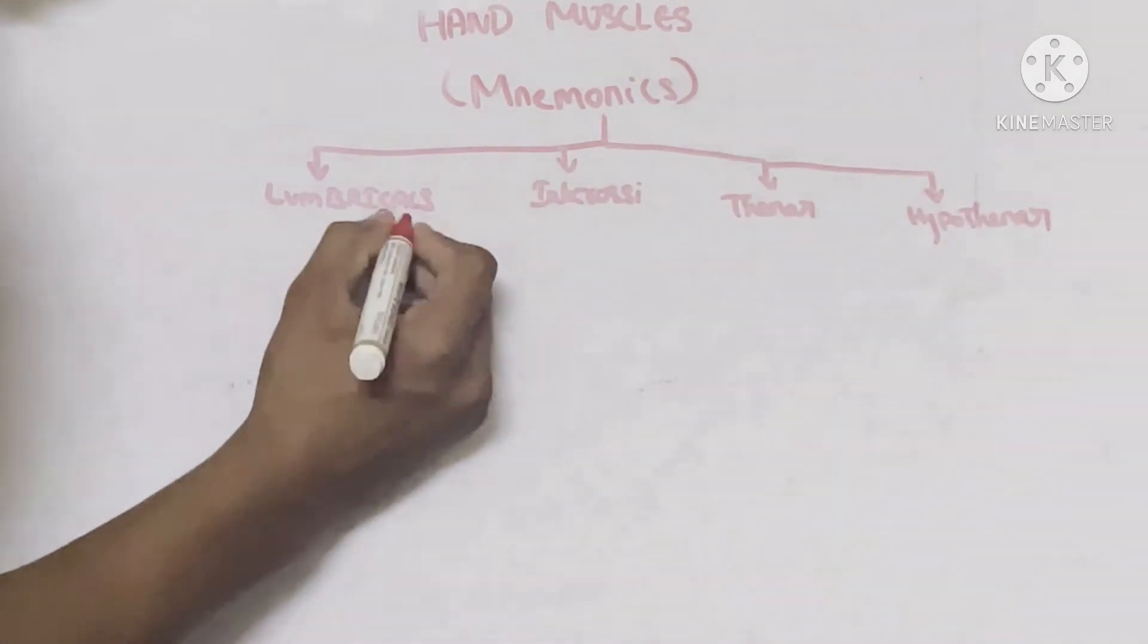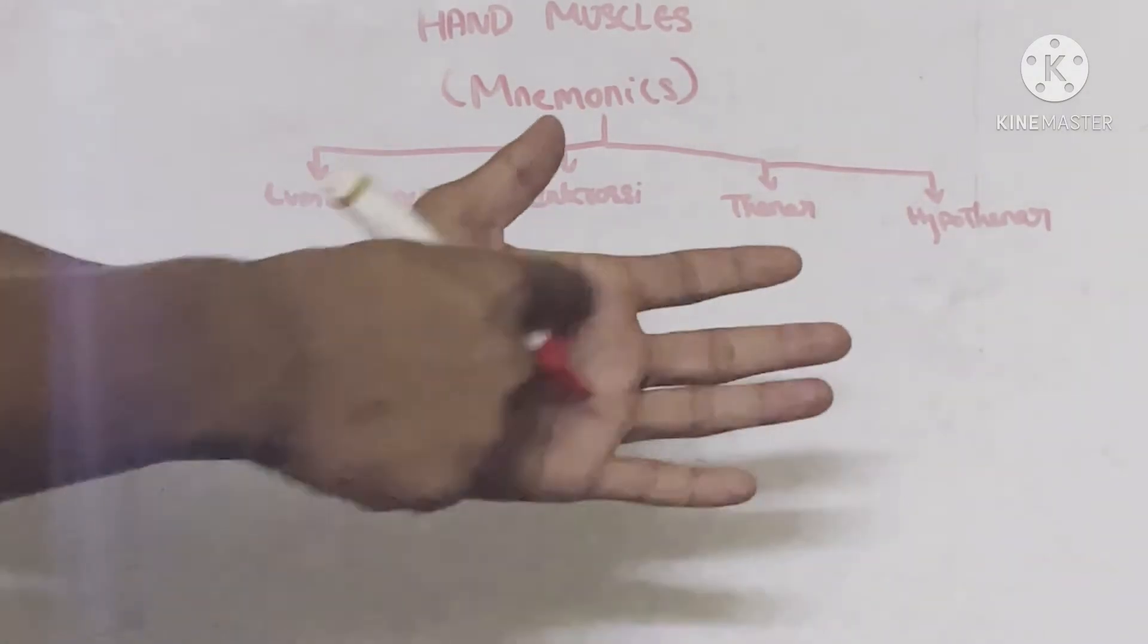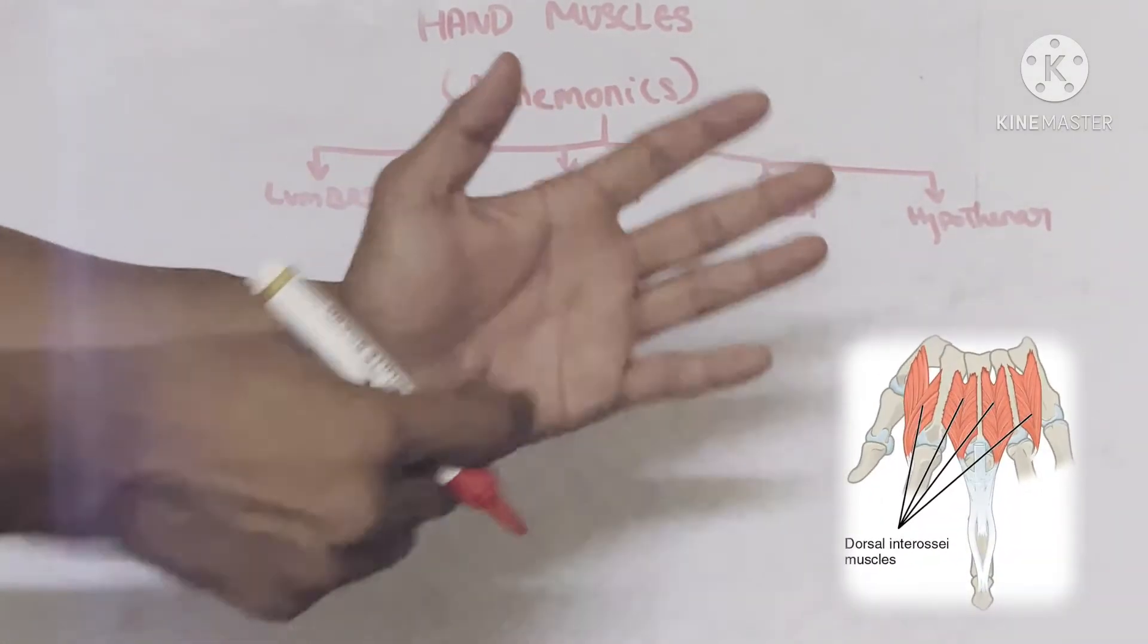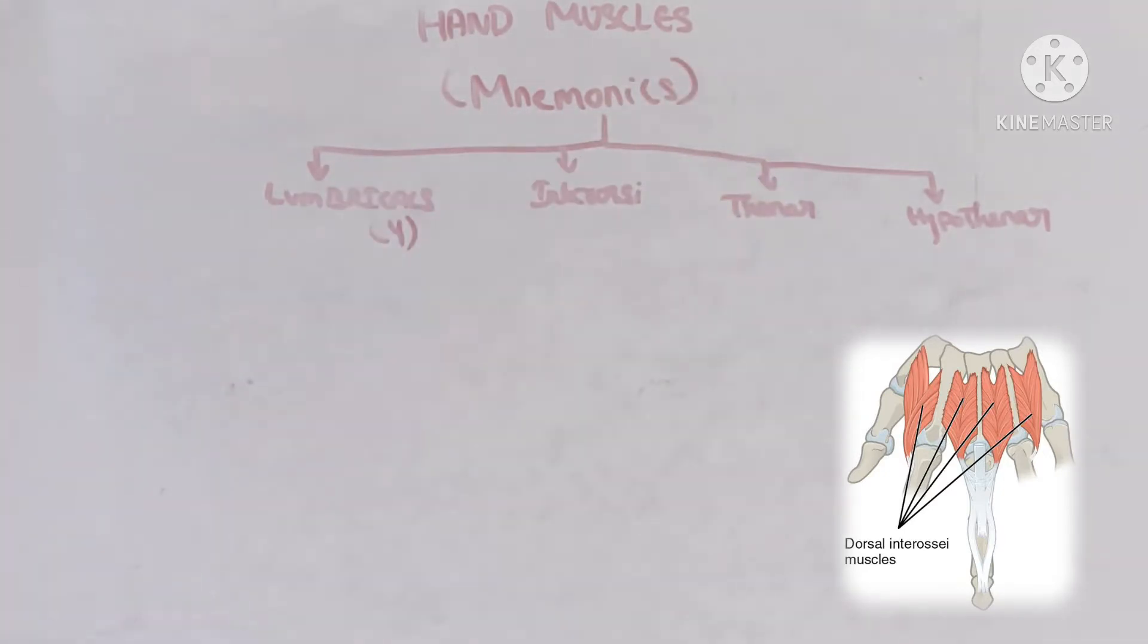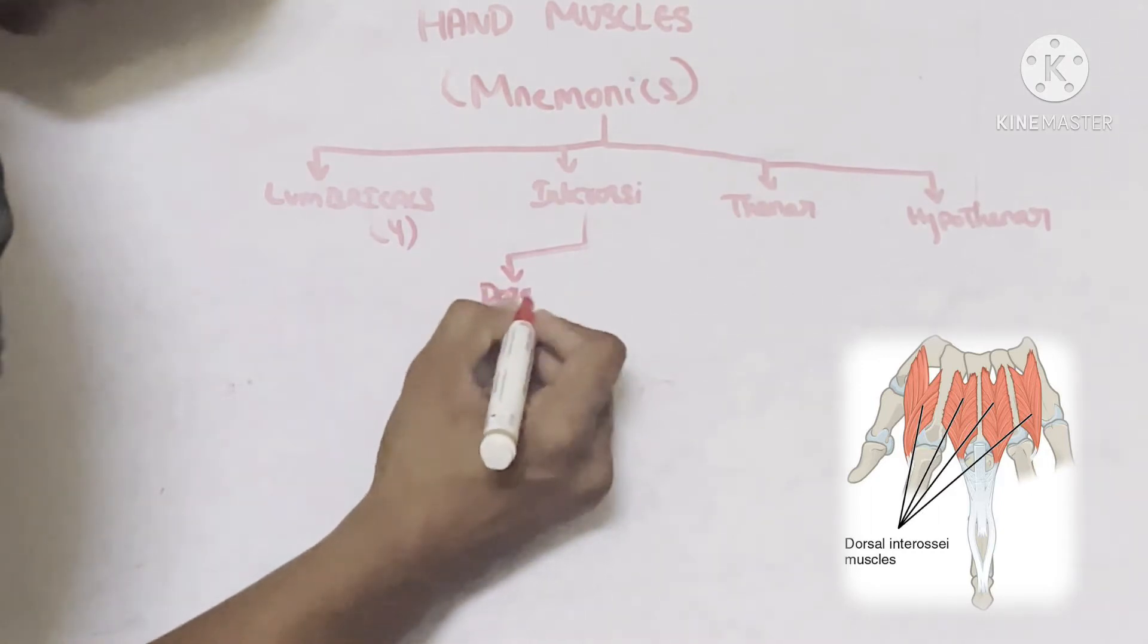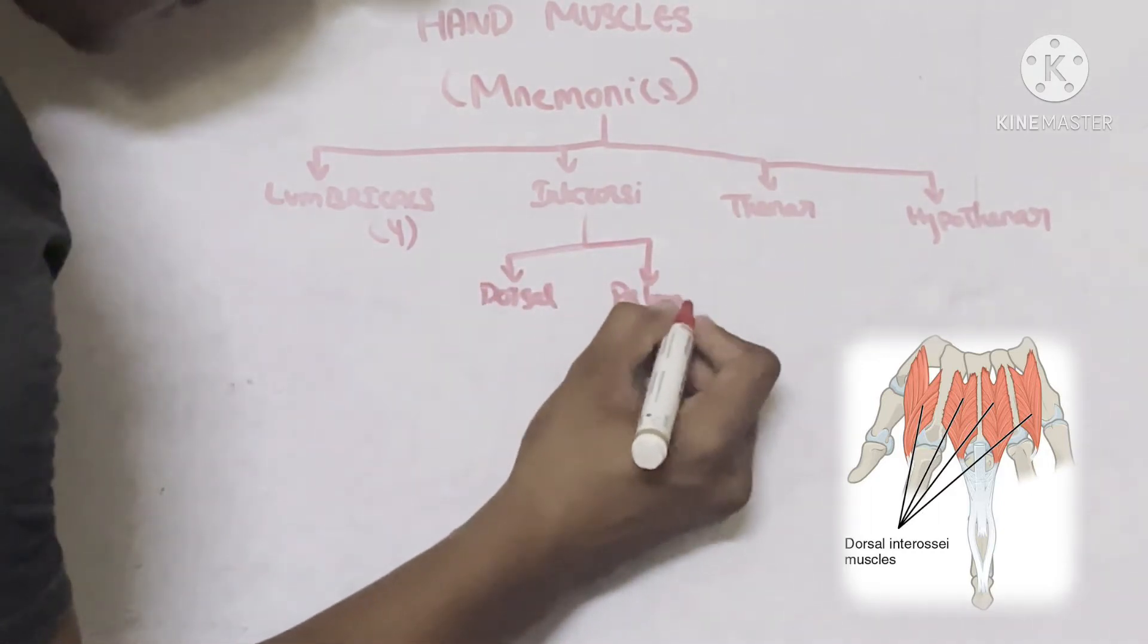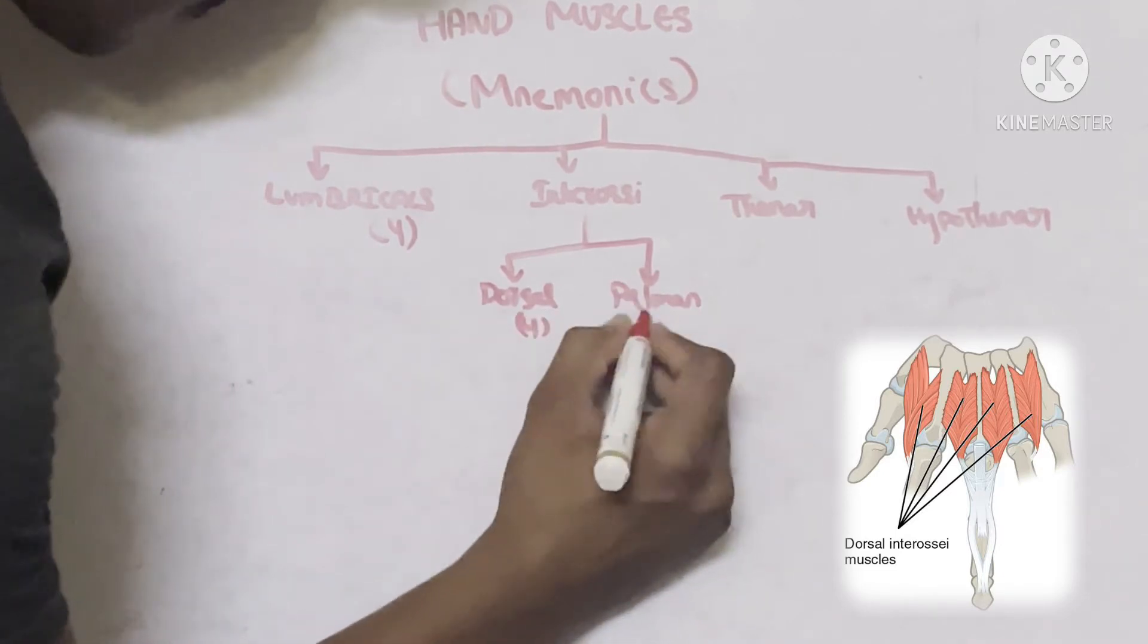If you take interossei, these are the muscles present between the metacarpal bones. If you take interossei, they can be subdivided into dorsal interossei and palmar interossei. Dorsal interossei have four muscles and palmar interossei have four muscles.